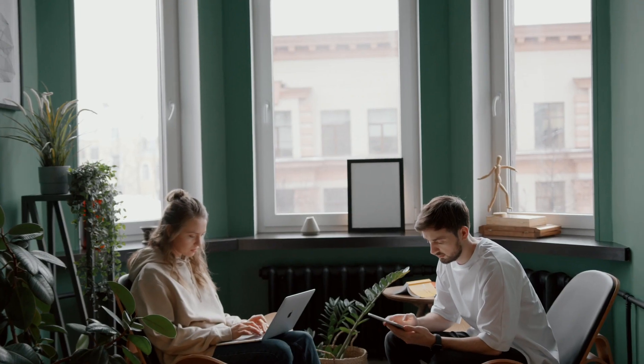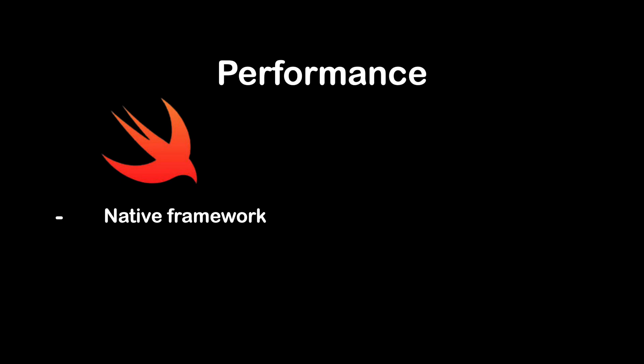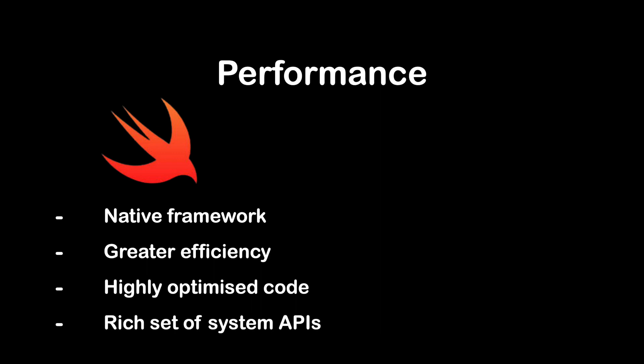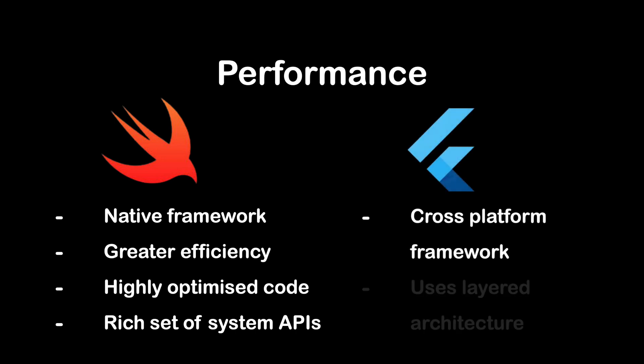The second parameter is performance. If budget is not your constraint and you are ready to have a separate application developed for each platform, then Swift is the best solution. Being a native framework, it offers greater efficiency and helps deliver fast, smooth, and reliable applications. Swift produces highly optimized code and offers a rich set of system APIs which can boost application performance. However, if you wish for a framework with cross-platform functionality and better cost efficiency, Flutter is equally efficient. Flutter uses a layered architecture that minimizes the overhead of platform-specific APIs, resulting in better performance, smooth animations, transitions, and fast startup times.